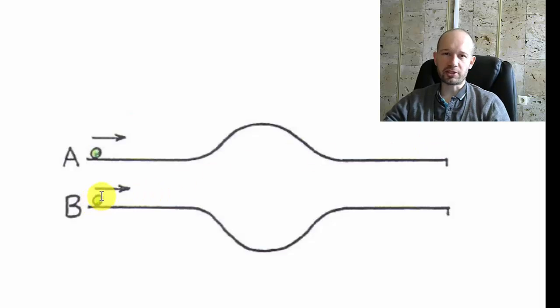And for ball B, it's the same except the opposite. So it's going to gain speed and then lose, but whatever it gains, it's going to lose the same amount. So again, at the end of the track, it's going to end up with the same speed.